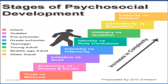The next stage is Identity versus Role Confusion, which is adolescence. The task is to know who am I. This is parallel to the genital stage in Freudian theory. The focus here is on social interaction — the task is to assume an identity: who am I, what do I want from my life?